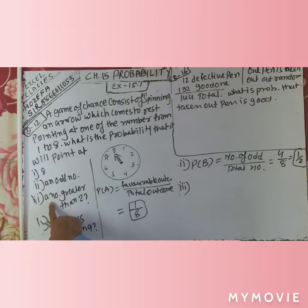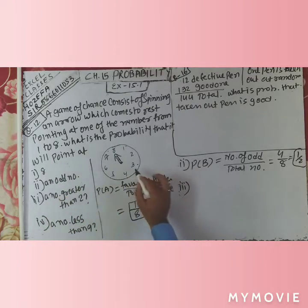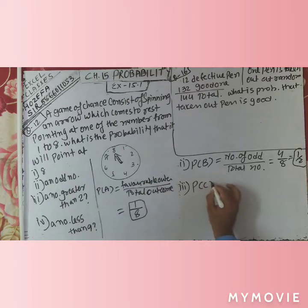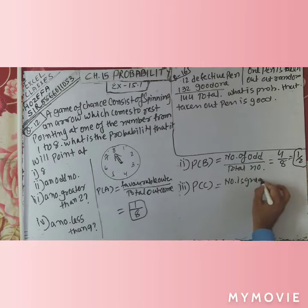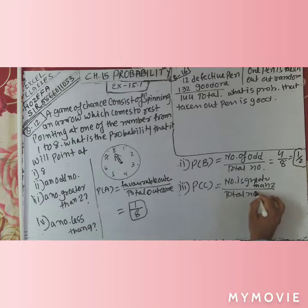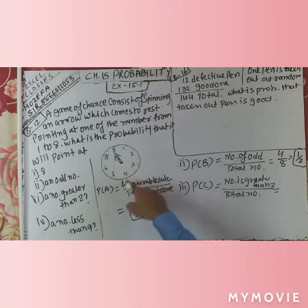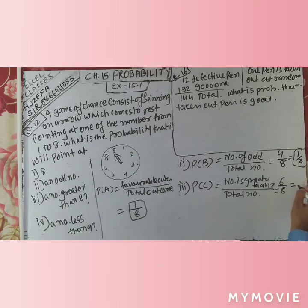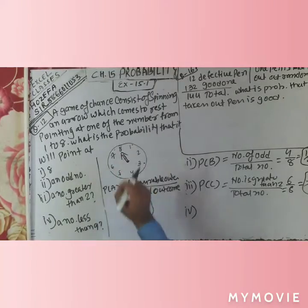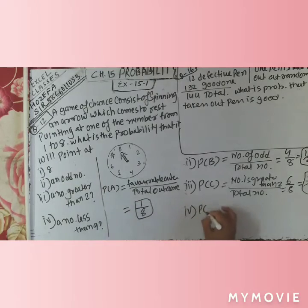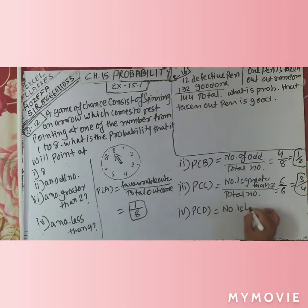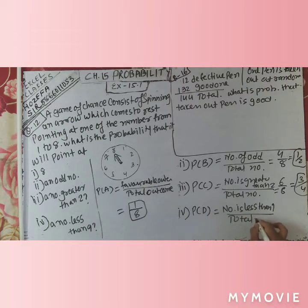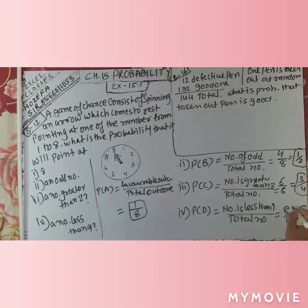Third event C: a number greater than 2. Numbers greater than 2 are 3, 4, 5, 6, 7, 8 — that's 6 numbers. So P(C) = 6 upon 8 = 3 upon 4. And the last event D: a number less than 9. Since there is no 9 on the board, all 8 numbers qualify. So P(D) = 8 upon 8 = 1.